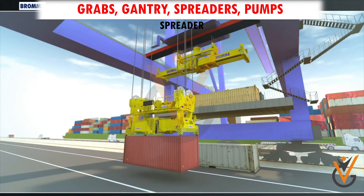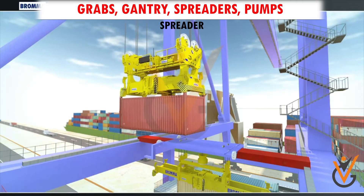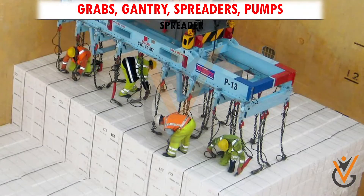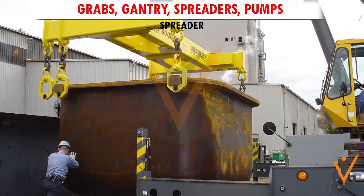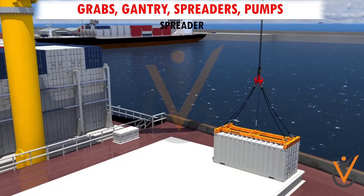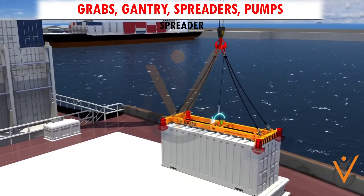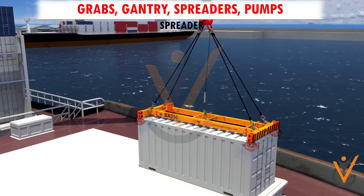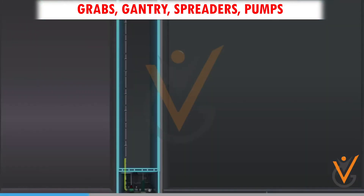A spreader is a device used for lifting containers and unitized cargo. It is placed between the container and the lifting machine. The spreader used for containers has a locking mechanism at each corner that attaches to the four corners of the container.